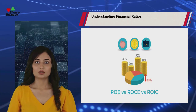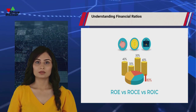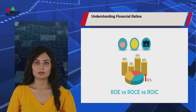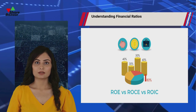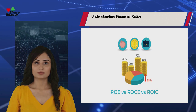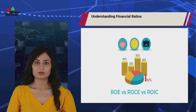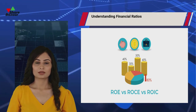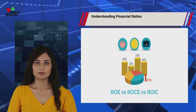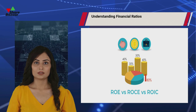Financial ratios serve as essential tools for investors and analysts to gauge a company's performance and financial standing. Among these, three key ratios stand out: return on equity (ROE), return on capital employed (ROS), and return on invested capital (ROIC), each offering valuable insights into a company's profitability and efficiency.